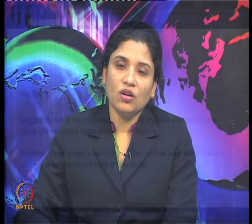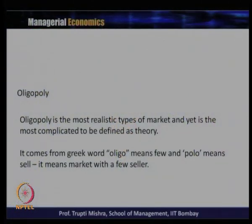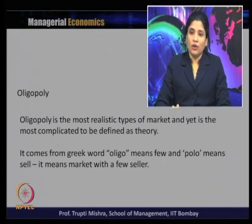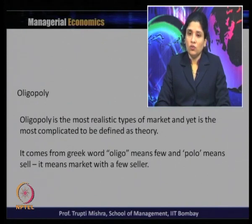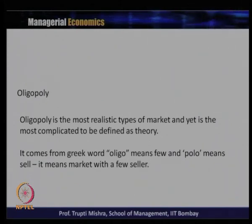Next we will move to oligopoly market structure, which is last in our list. Most of the real world market is of an oligopoly nature — oligopoly is the most realistic type of market and yet the most complicated to define as theory. When it comes to theory, we generally take all models of oligopoly with just two firms. The word comes from the Greek — oligo means few and polo means to sell — so it means a market with few sellers.